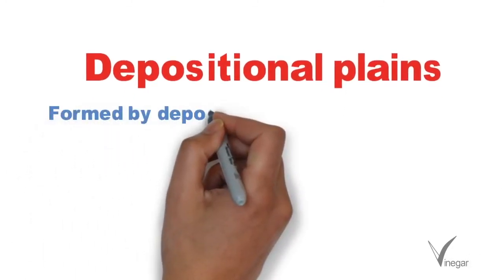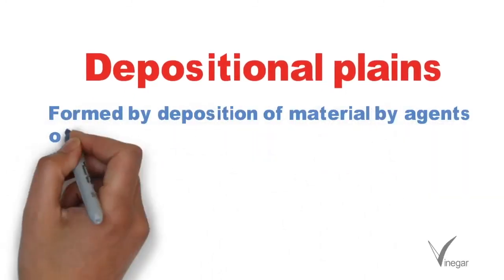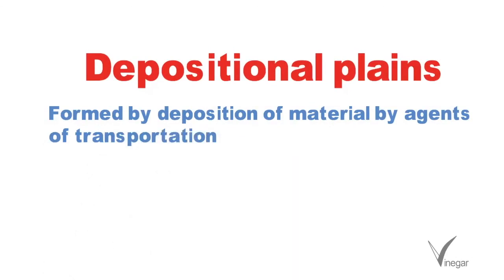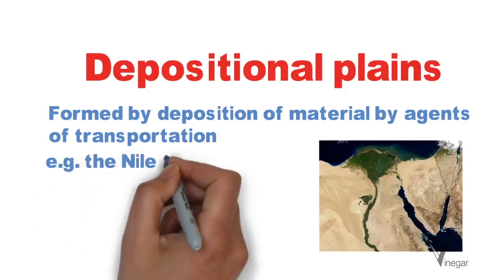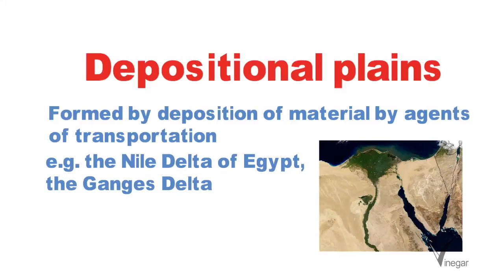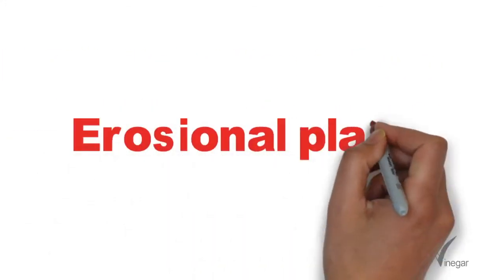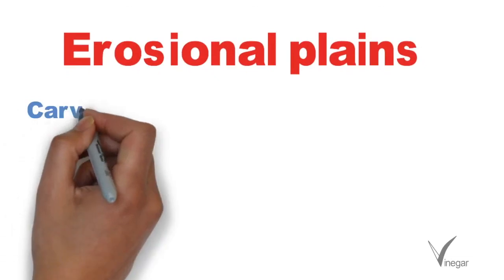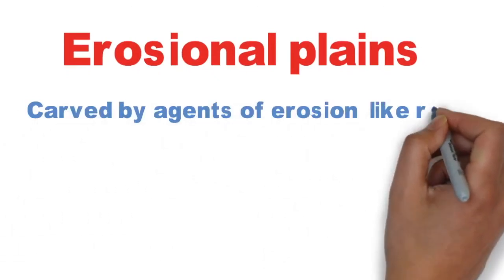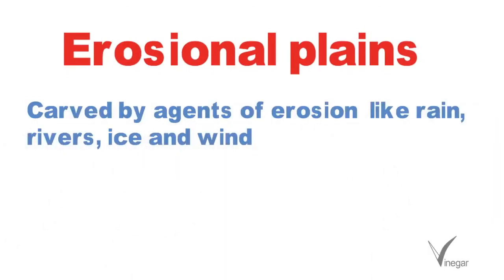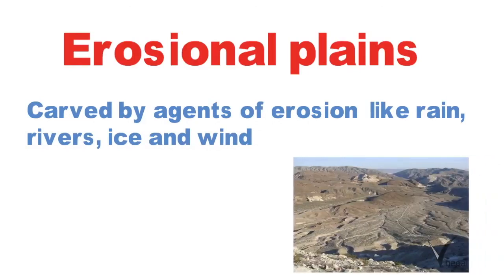Depositional plains are formed by the deposition of material by different agents of transportation. The agents of transportation may be rivers or other agents as well. Examples are the Nile Delta of Egypt and the Ganges Delta of India. The third type of plain is the erosional plain, created by agents of erosion like rain, rivers, ice, and wind.